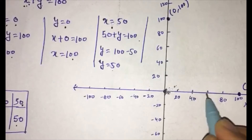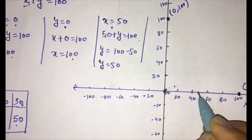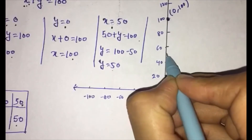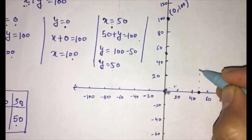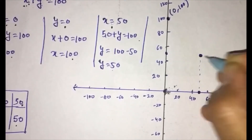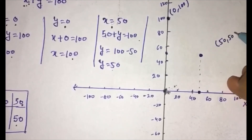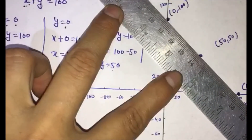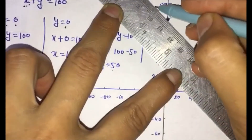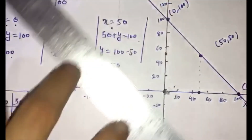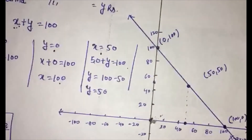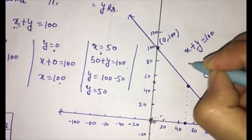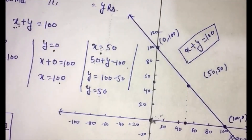On the X-axis at 50, we mark the point (50, 50) on the graph. We roughly draw the line through all three points — (0, 100), (100, 0), and (50, 50) — and the graph for the line X plus Y equals 100 is complete.